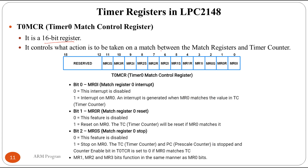The Timer 0 Match Control Register is a 16-bit register. Bit 0 enables an interrupt on match register 0. Bit 1, when set to one, resets the timer on match. The next bit, when set to one, stops the timer on match. Based on these bit values, the timer operation is controlled.